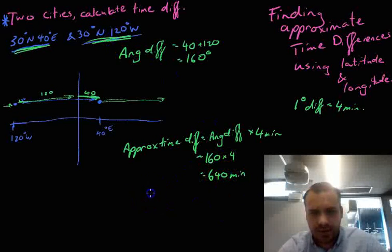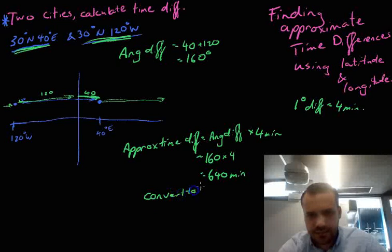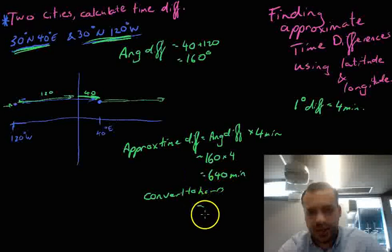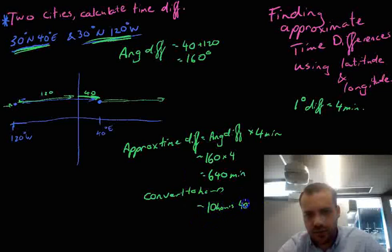Now in terms of hours, it's probably a good idea to convert to hours. If we divide that by 60, we'll get 10 hours and 40 minutes.